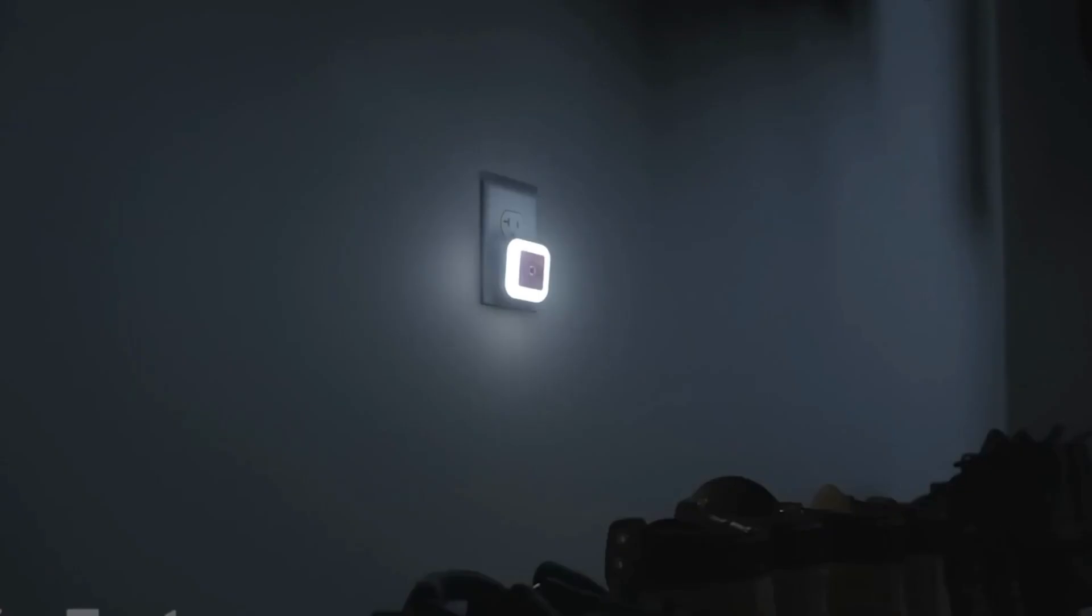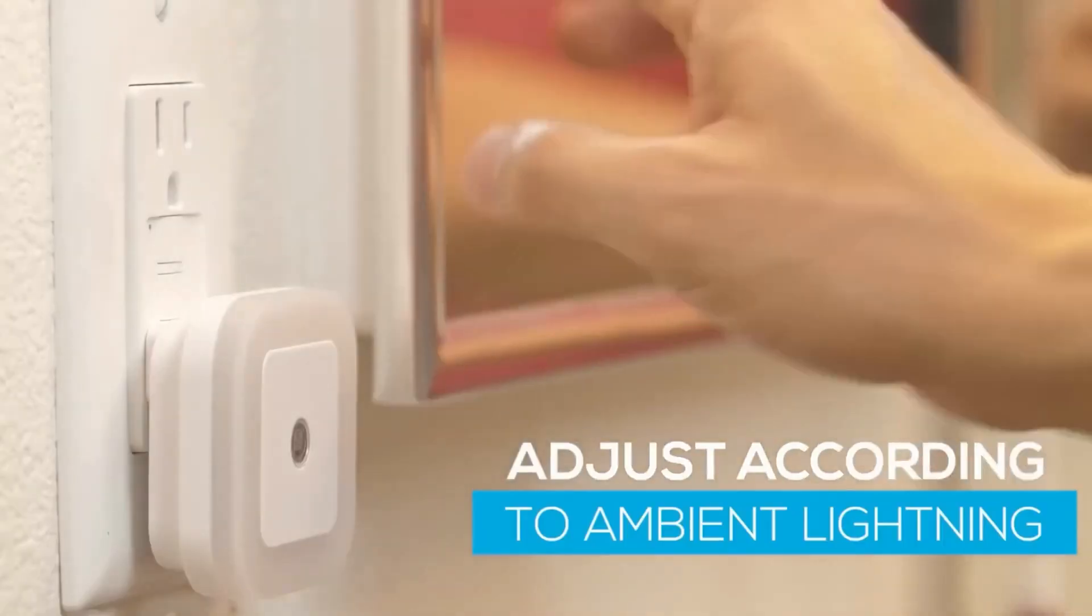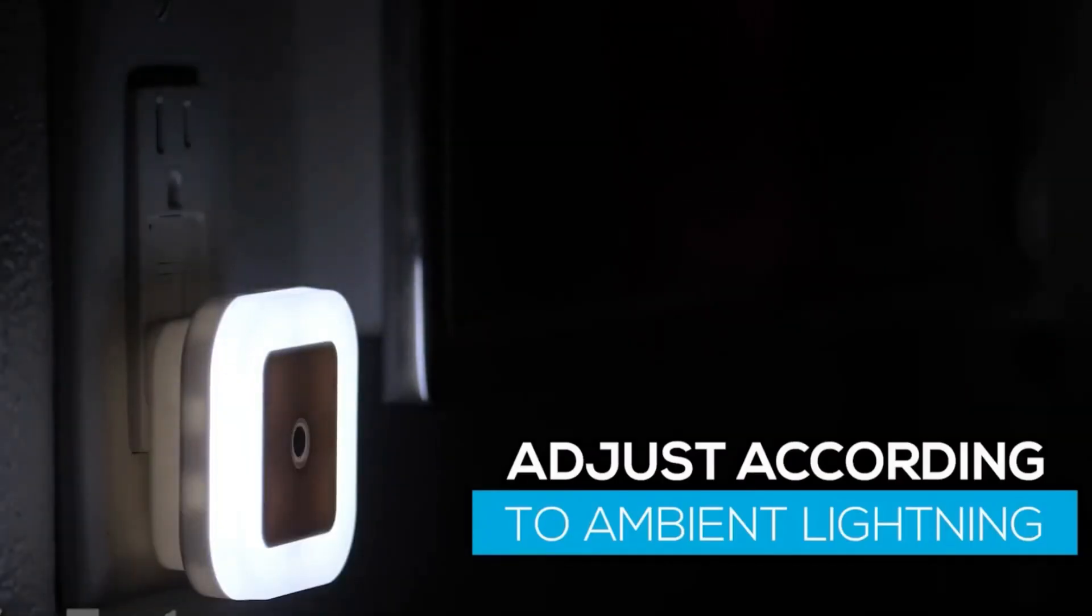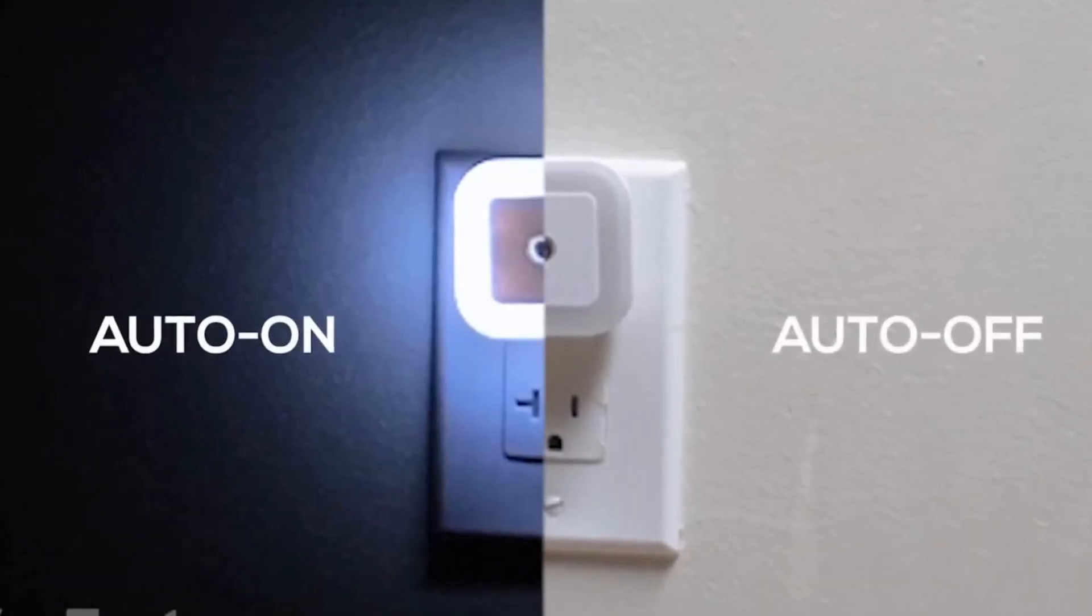This gadget will help you move around the house when it's dark without interrupting others by turning on the main lights. The Fanlira LED nightlight will provide you with just the right amount of light. Due to the built-in sensor, it automatically turns on as the ambient light becomes insufficient. More than that, it adjusts itself throughout the night intelligently.